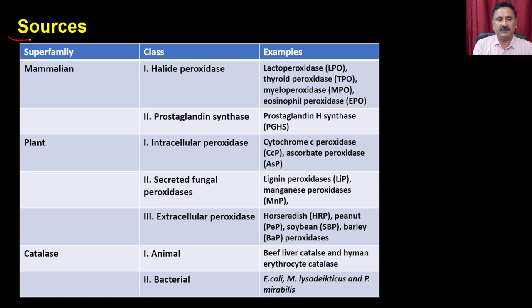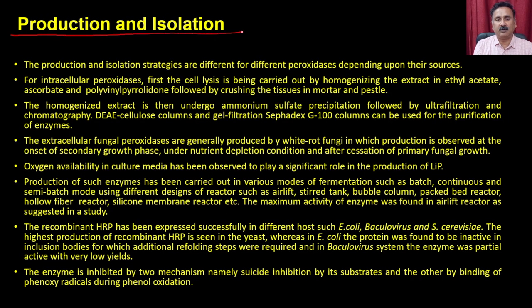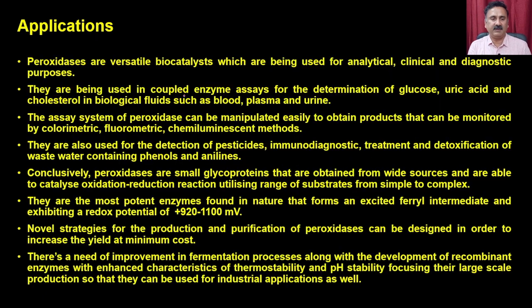As far as the sources of peroxidase are concerned, it can be from mammalian sources, plant sources or catalase — including halide peroxidase, prostaglandin synthase, intracellular peroxidase, secreted fungal peroxidase and extracellular peroxidase. Similarly you can have catalase from animal or bacterial sources. For intracellular peroxidases, production and isolation involves cell lysis by homogenization, with the extract present in tyloxapol, ascorbate and PVP, followed by crushing the tissue in mortar and pestle.